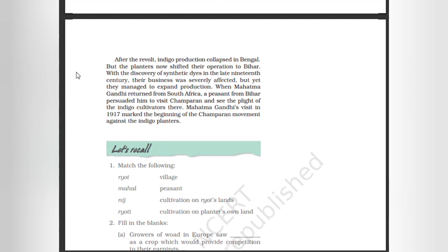After the revolt, indigo production collapsed in Bengal. The planters now shifted their operations to Bihar. With the discovery of synthetic dyes in the late 19th century, the indigo business was severely affected. When Mahatma Gandhi returned from South Africa, a person from Bihar persuaded him to visit Champaran and see the plight of the indigo cultivators there. Mahatma Gandhi's visit in 1917 marked the beginning of the Champaran Movement against indigo planters. That's all about this chapter — if you are interested, please do like, share, and subscribe to the channel.